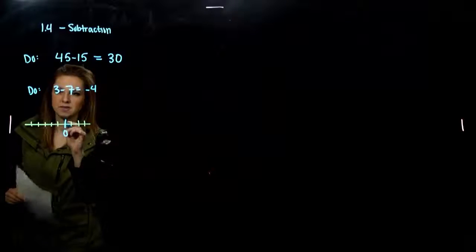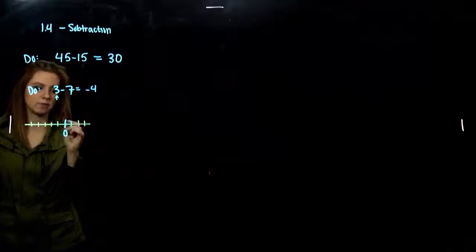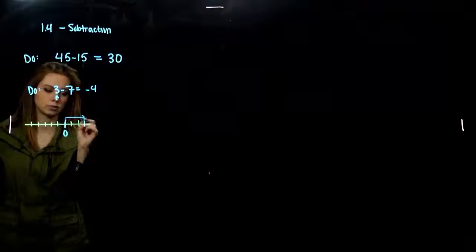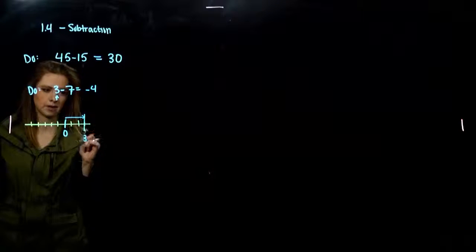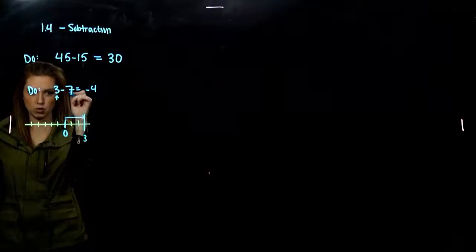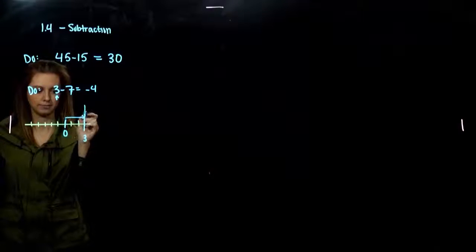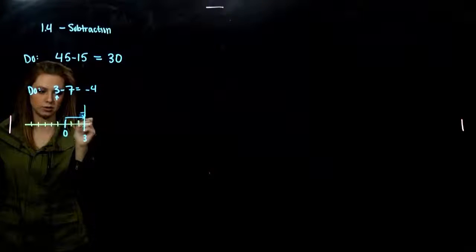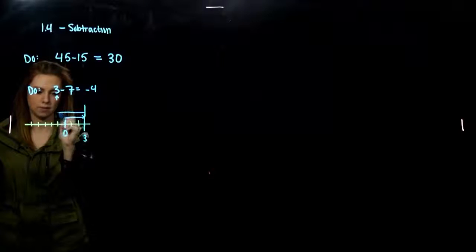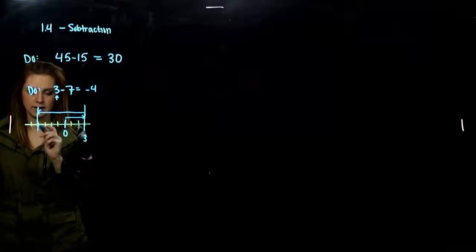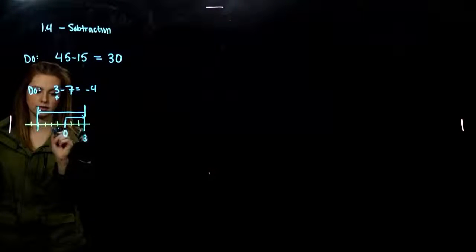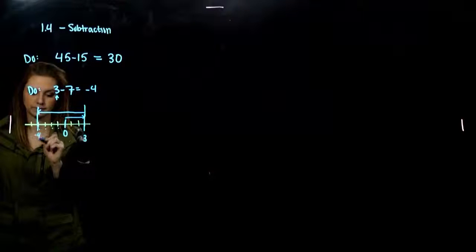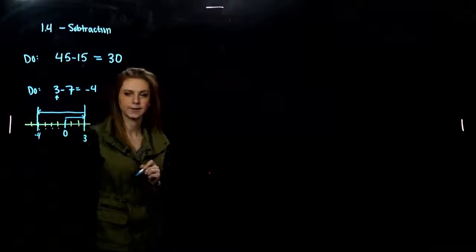I'm starting from 0, and the first chunk tells me to move 3 in the positive direction. Then, from there, move 7 in the negative direction. So, 1, 2, 3, 4, 5, 6, 7. And, what value are we at? Negative 4.